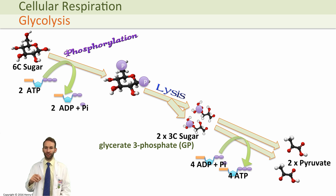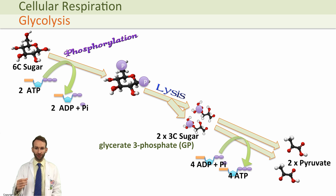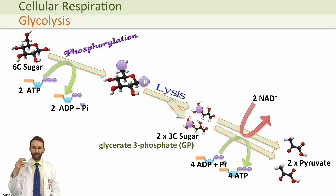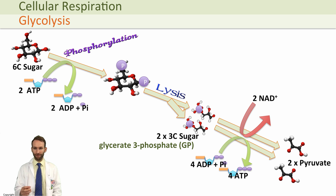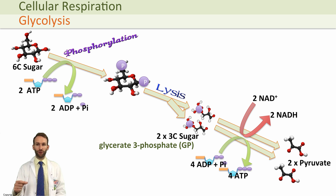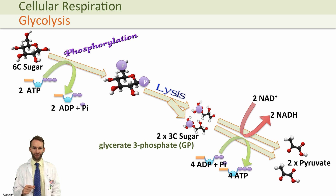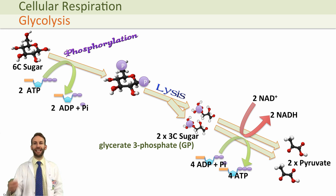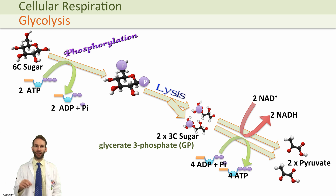We also do a reduction — we reduce NAD. NAD is a coenzyme and a hydrogen acceptor; it accepts hydrogens. We take two NAD+ molecules, and they gain electrons and hydrogens to become reduced NAD, also known as NADH. This is very important because throughout the other reactions we'll make quite a lot of NADH, and that NADH will eventually go to the last part of aerobic respiration — the electron transport chain — where it will be used to generate ATP.